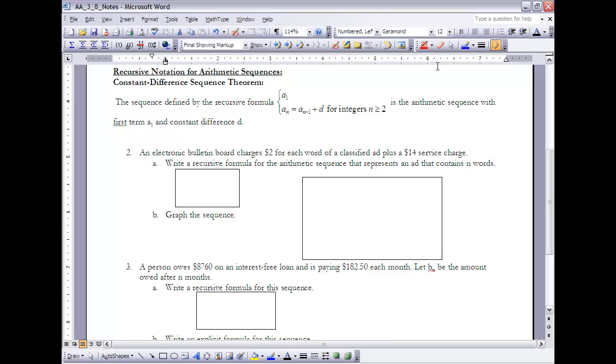We can also write arithmetic sequences using a recursive definition or a recursive formula. The way that we can do that is very similar. I only need to know two pieces of information: what is the first term, and what is the constant difference? So, I'm going to make a statement about the first term, a sub 1 equals, and then whatever that would be. And then I'm also going to make a statement of a sub n, and that's going to be equal to the previous term plus whatever the difference is, for all the integers greater than or equal to 2. So, I need to state what the first term is, and then the next term is based on the previous term plus the difference.